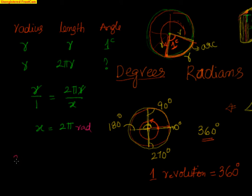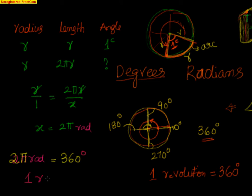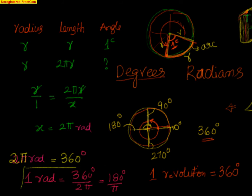So I can equate both of them: 2π radians is equal to 360 degrees. This gives me: 1 radian is equal to 360 degrees divided by 2π, that is nothing but 180 degrees by π. This is the relationship between radians and degrees. Or simply remember: 2π radians equals 360 degrees.